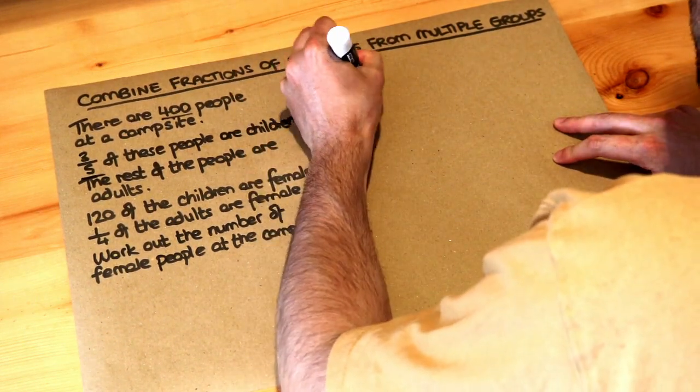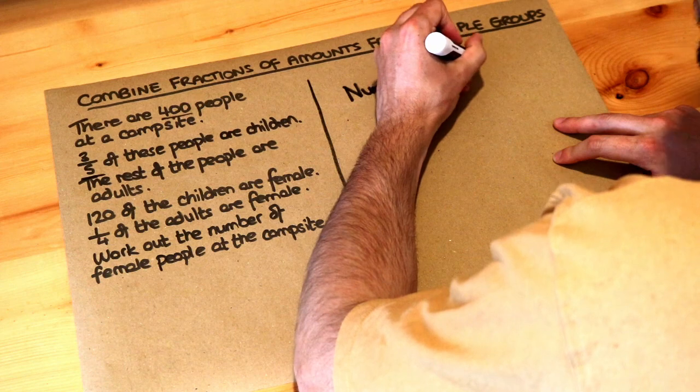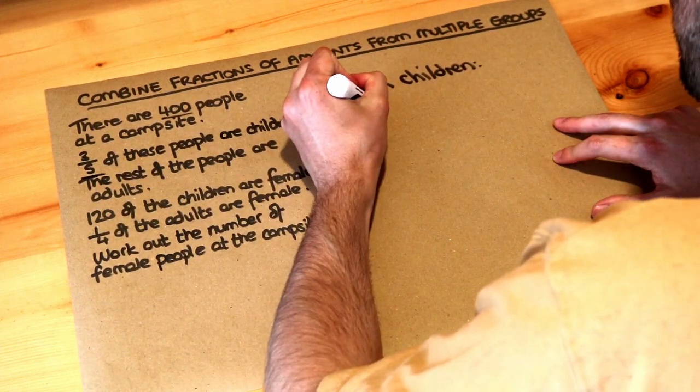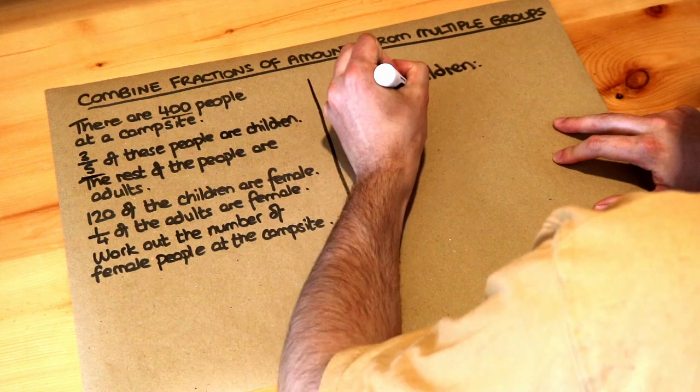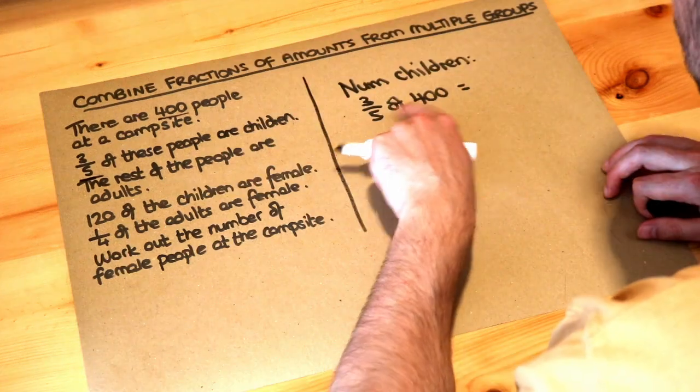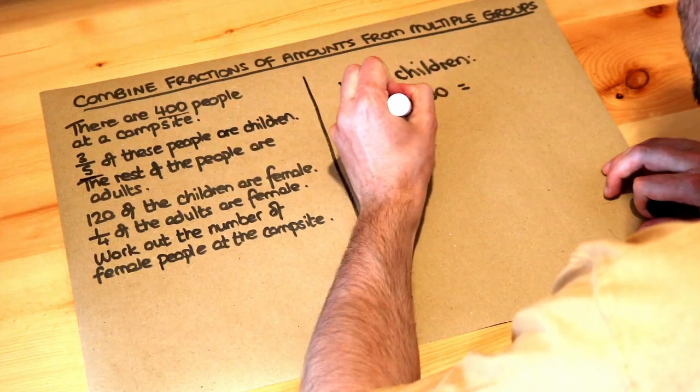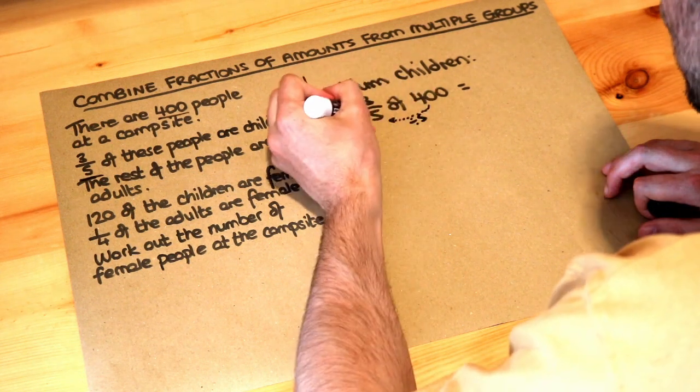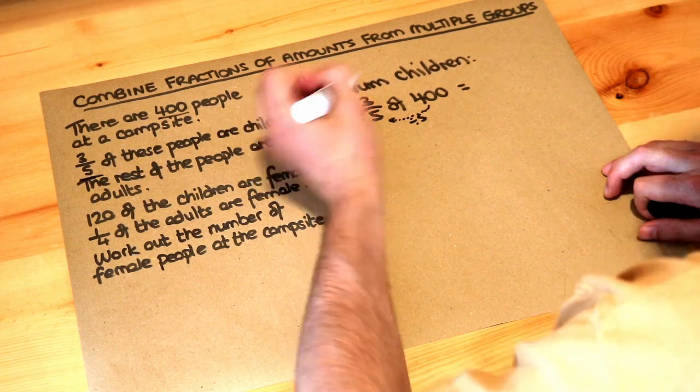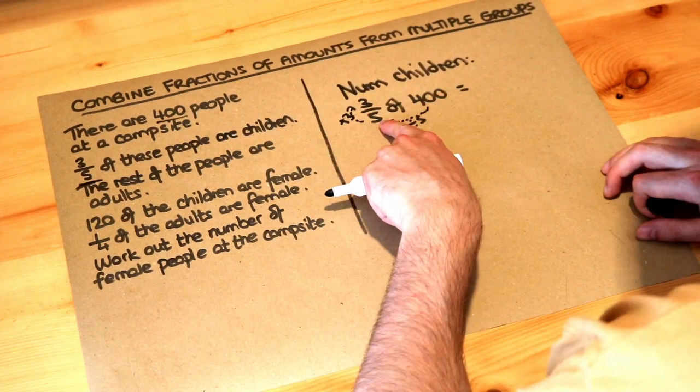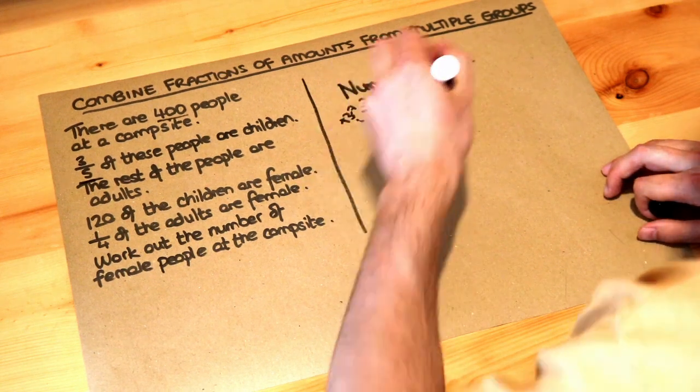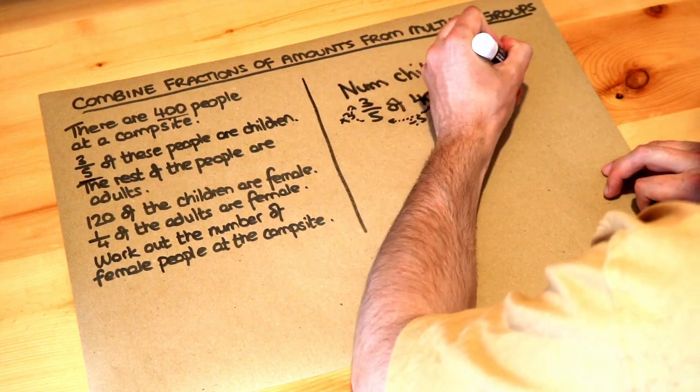So the number of children, well we're told it's three-fifths of the 400 people. So three-fifths of the 400 people, and remember to find a fraction of an amount we can just divide that number by the denominator here, so divide by the five, and then times by the numerator there, so times by the three. So 400 divided by 5, we could use a calculator if we wanted to, is 80. 80 times 3 is 240, so there's 240 children.